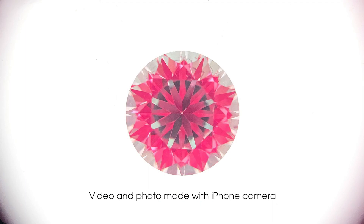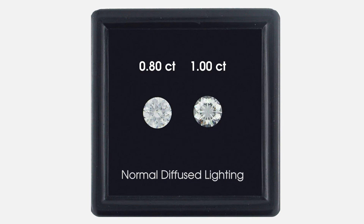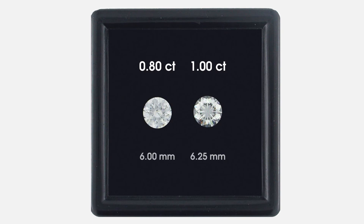In a jewelry store, under bright spotlights, they both seem big and bright. But now let's see them in normal lighting. Here the deficits you can clearly see in IdealScope become apparent. The 1-carat stone loses brightness at the edges and now appears visually smaller than the 80-pointer, even though it's physically larger.